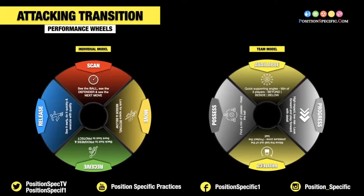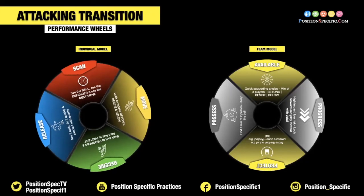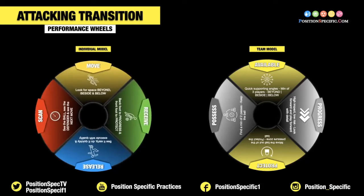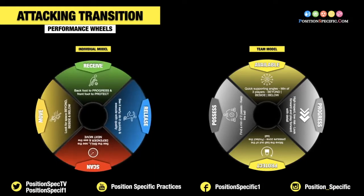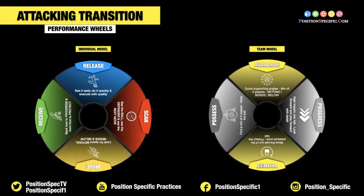Thinking about attacking transition, we always look to our performance wheels — we have an individual model and a team model. Individually, in attacking transition, in possession, we ask our players to scan: can they see the ball, can they see the defender, and can they see their next move? Can they think about their movement — looking for space beyond, beside, or below the opposition? We ask them to think about their receiving skills: back foot to progress forward and front foot to protect if they need to maintain possession. And releasing skills: can they see it early, do it quickly, and execute with quality?